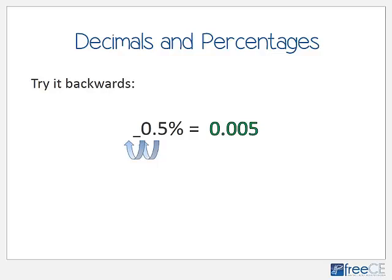To go from percentages back to decimals, move the decimal two places to the left instead of the right. Where you need to move but there's no number, just add a zero. So 0.5% becomes 0.005 — we've moved the decimal two places to the left.